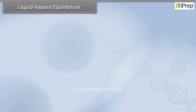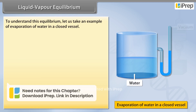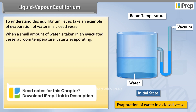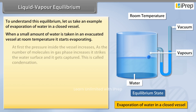Liquid Vapour Equilibrium. To understand this equilibrium, let us take an example of evaporation of water in a closed vessel. When a small amount of water is taken in an evacuated vessel at room temperature, it starts evaporating.